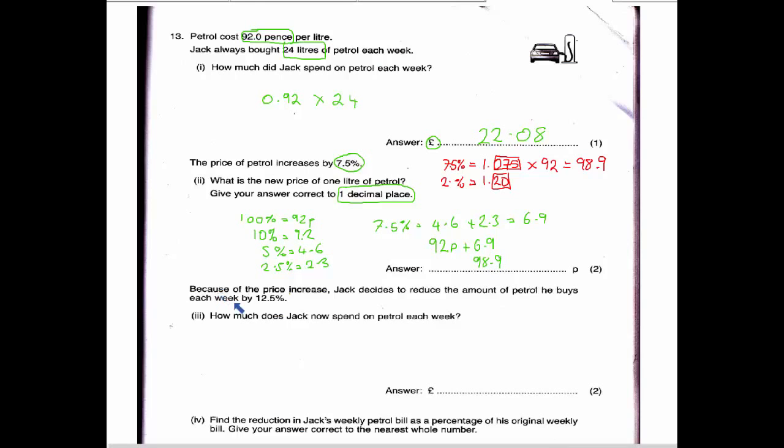In the third part, we find that because of the price increase, Jack decides to reduce the amount of petrol he buys each week by 12.5%. How much does Jack now spend on petrol each week? So we're going to be using this new price, 98.9 pence, and we're going to be finding a reduced amount of petrol that he buys. So he normally buys 24 litres, but we're going to reduce that by 12.5%.